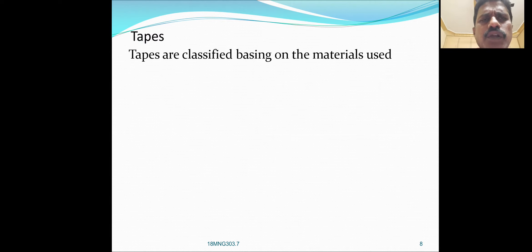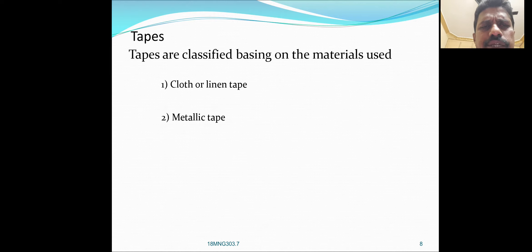Tapes are classified based on materials used. Tapes are made of cloth tape, metallic tape, steel tape, and invar tape. These are the four types of tapes used in surveying.